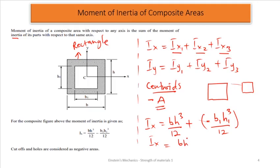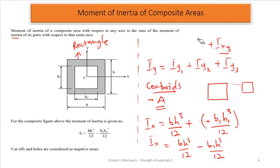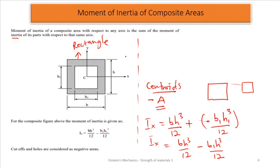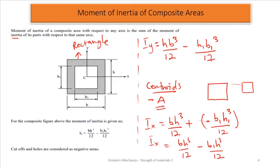So the total Ix for the composite figure is bh³/12 − b1h1³/12, because the second shape is a cut-out. Similarly for the y-axis, Iy = hb³/12 − h1b1³/12. Remember: all cut-outs are considered as negative areas. With this introduction we should be able to solve questions and apply moment of inertia.